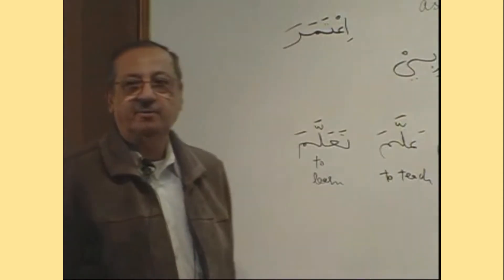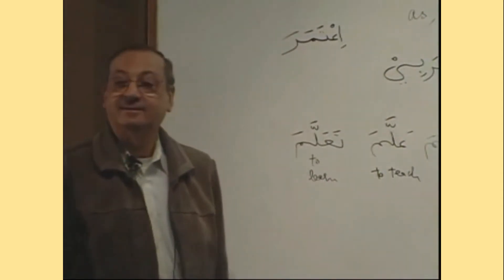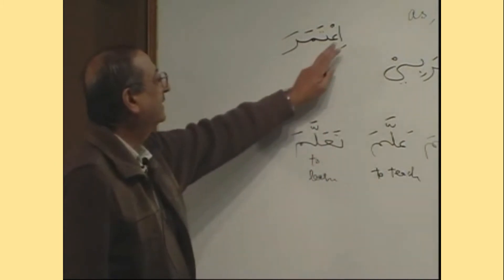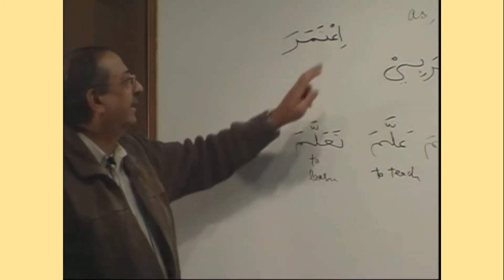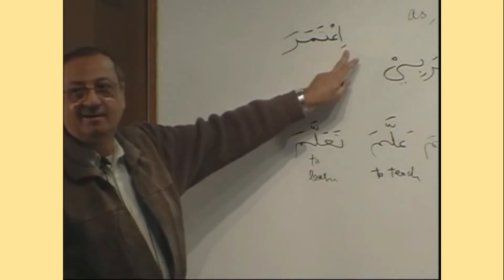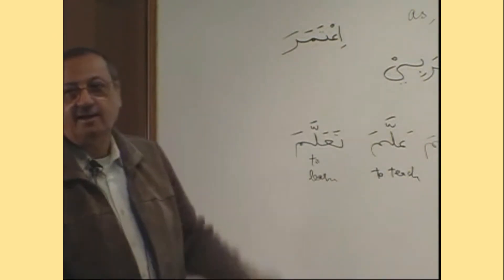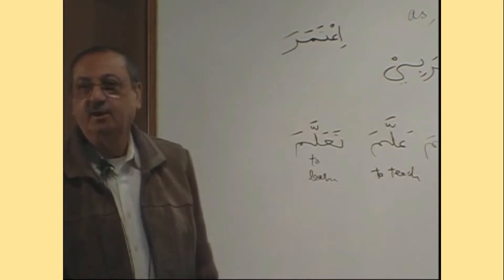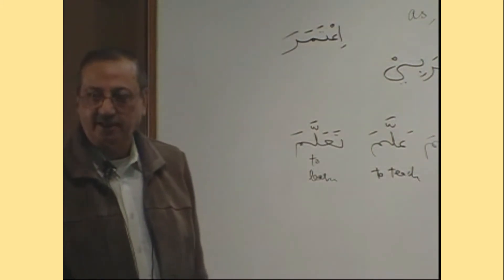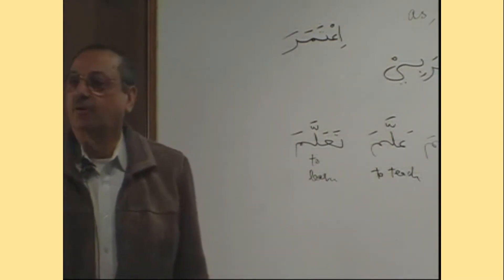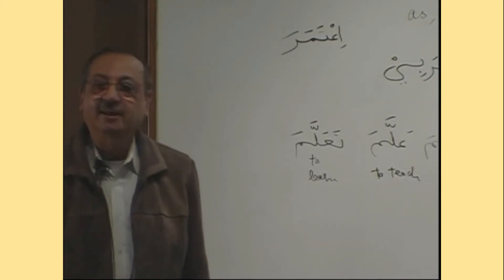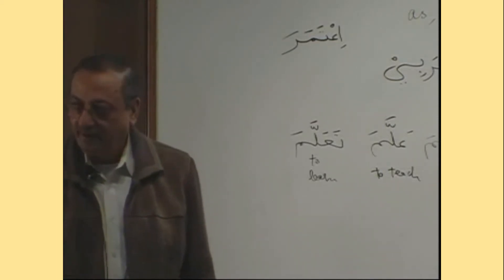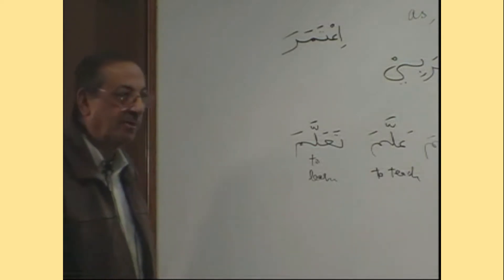What is the verb? Iyatamara. The root is Ayn, Meem, and Ra. The extra letters are Hamza and Ta. This is Form 8. We will be doing it, inshallah, in the very near future. Iyatamara means he performed Umrah. What will be the Mudariya? Yatamir.